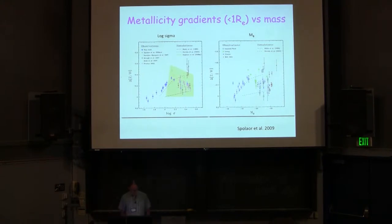So this is what was known about metallicity gradients in galaxies as a function of mass at this time, 2009-2010.